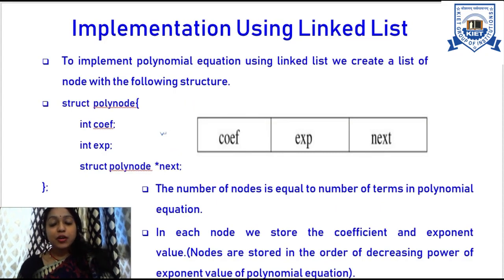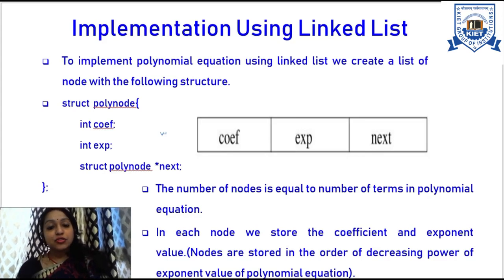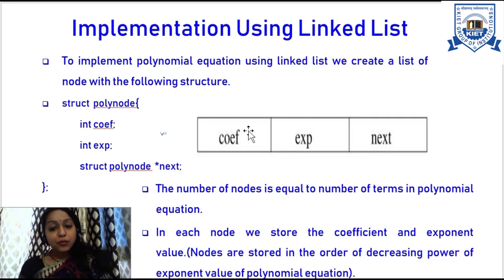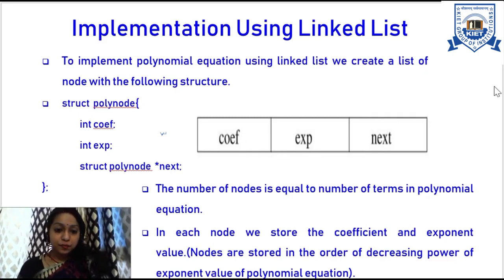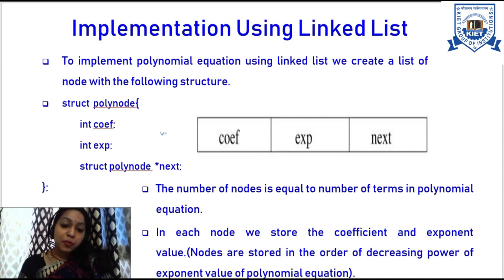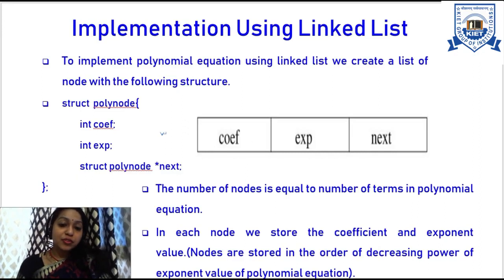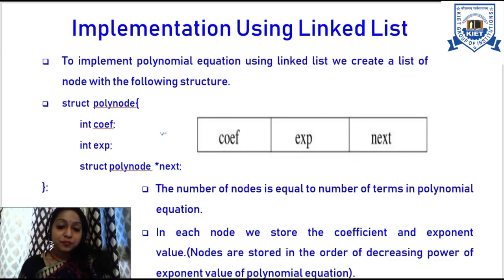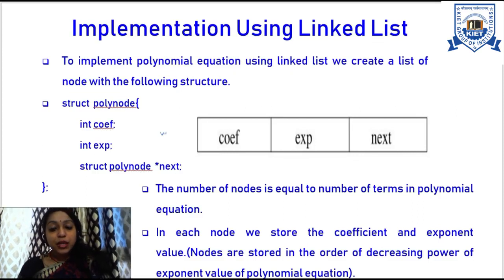The next method is implementation using linked lists. To implement a polynomial equation using a linked list, we create a list of nodes. Each node stores the coefficient value, the exponent value, and the address of the next node. The structure for a node of a polynomial equation will be: integer coefficient, integer exponent, and a pointer to the next node of the same struct type.